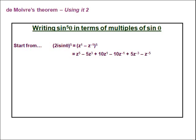The first term is z¹ to the power of 5, which is z⁵. The next term is 5 lots of z⁴ times z⁻¹, giving a z³ term with coefficient 5. The remaining terms work in the same way.